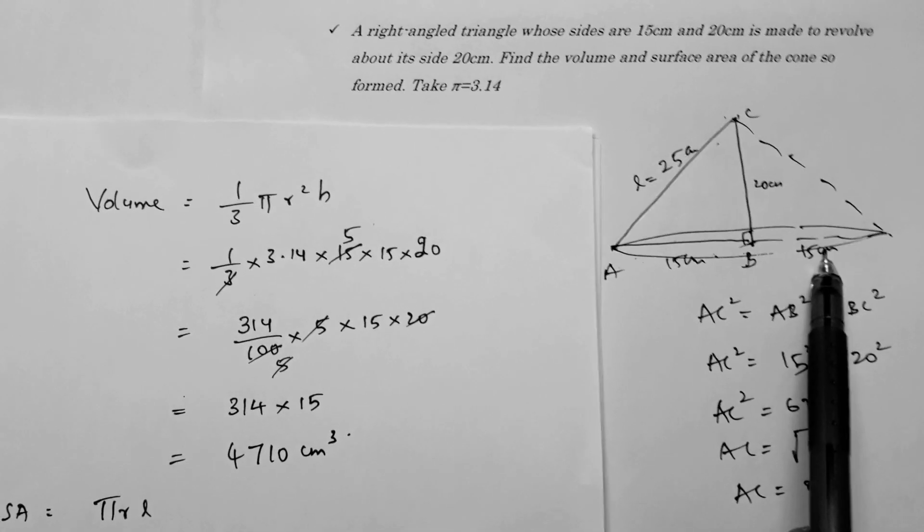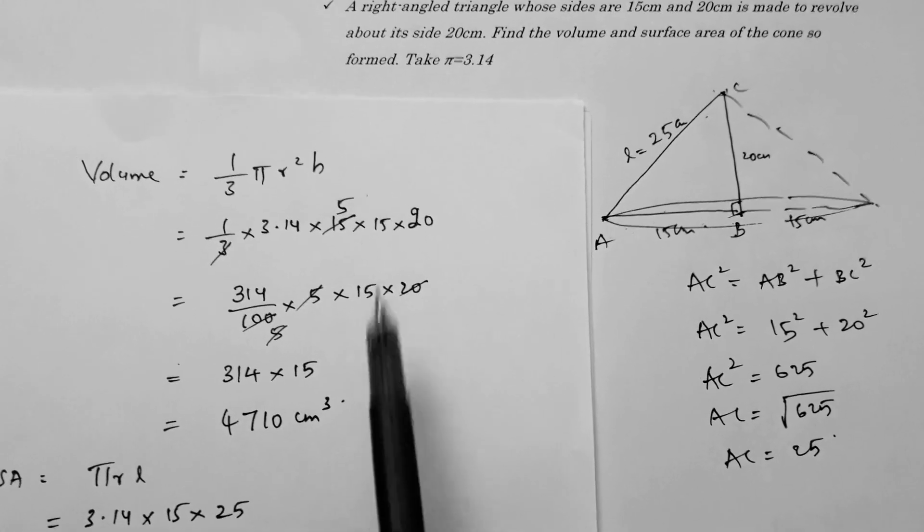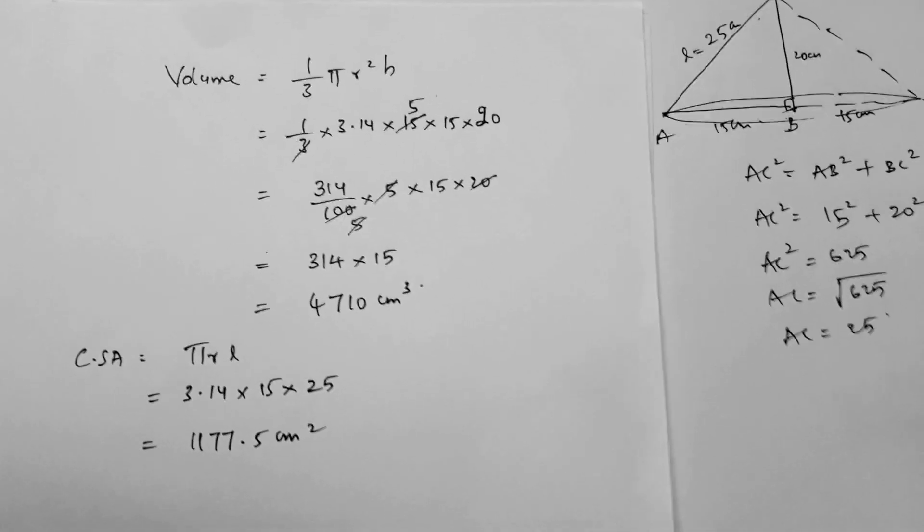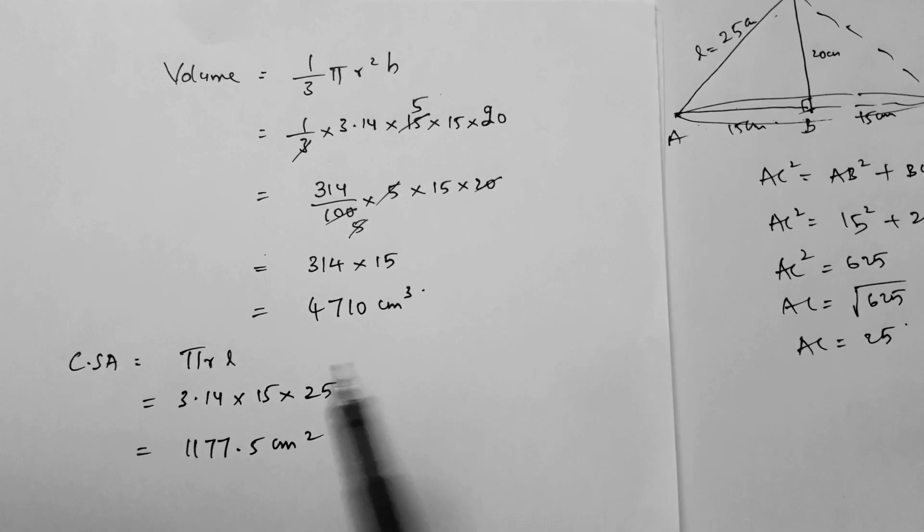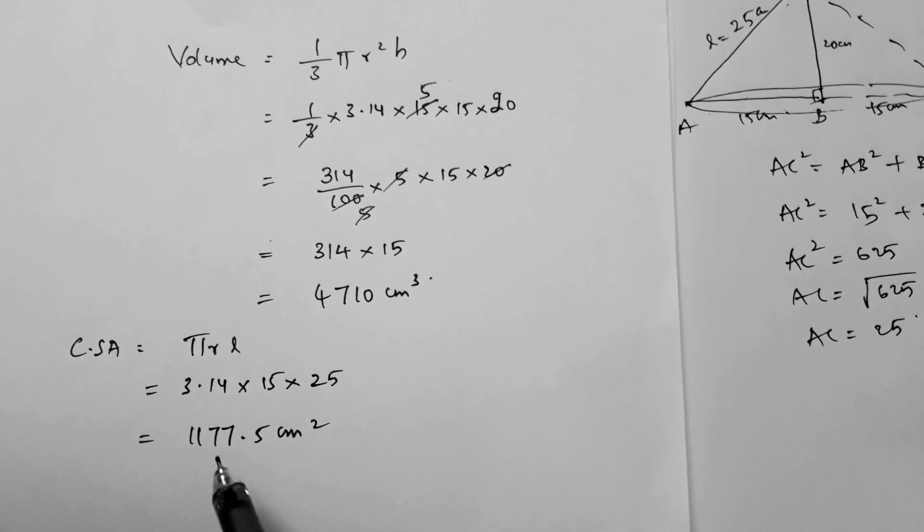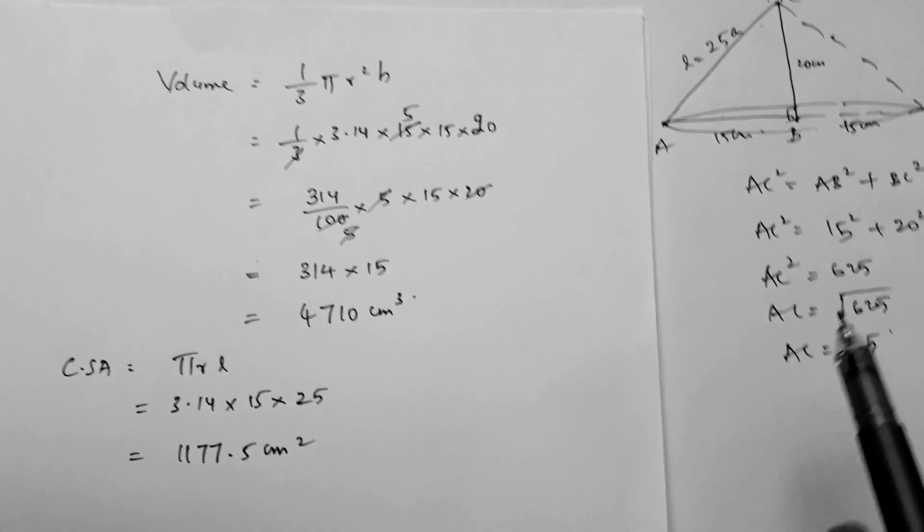When we calculate, we'll get this answer. The curved surface area is πrl, so 3.14 times 15 times 25, and we'll calculate to get this value.